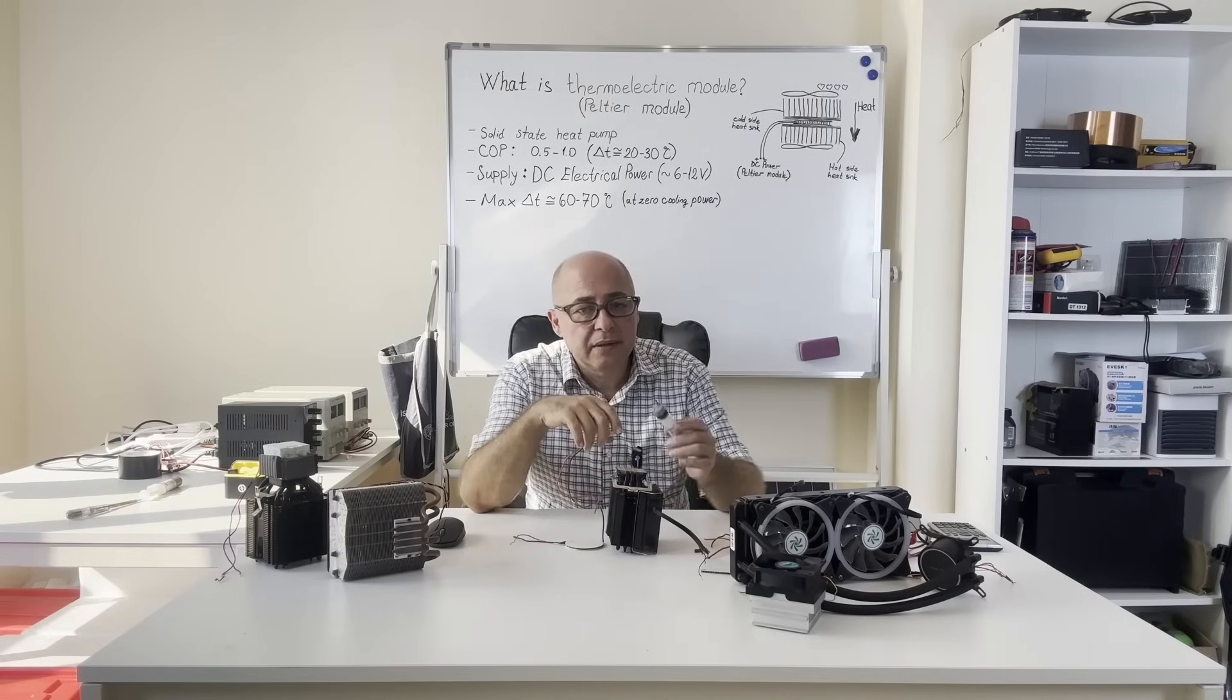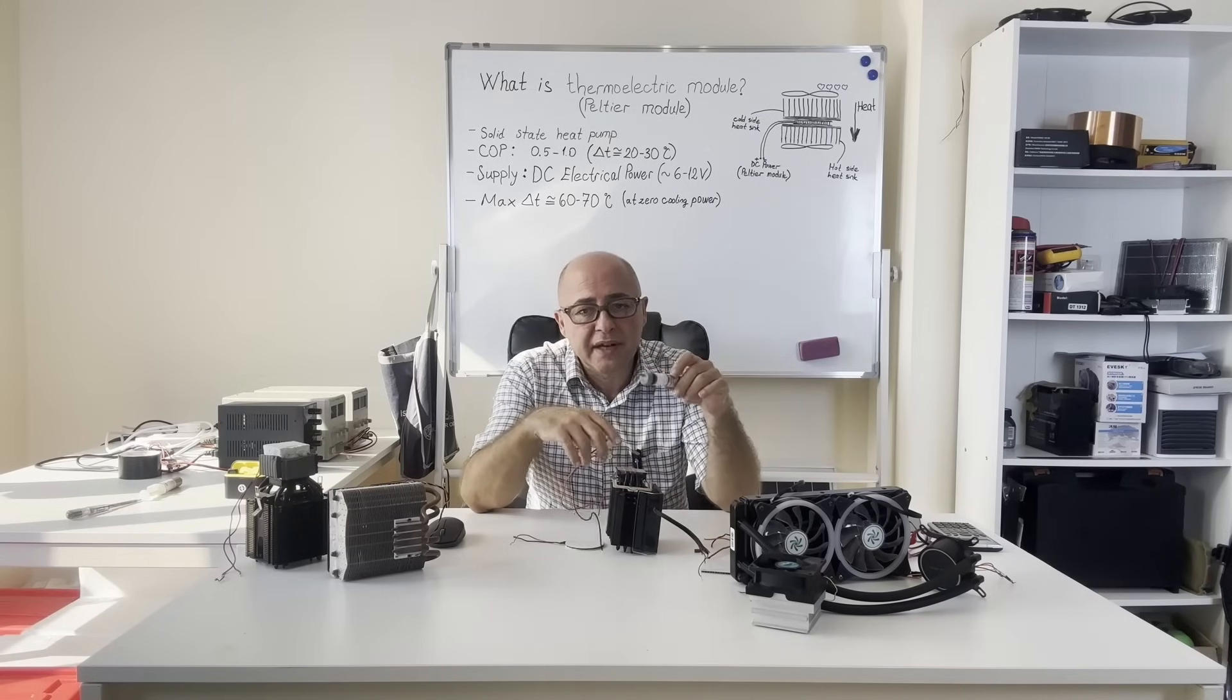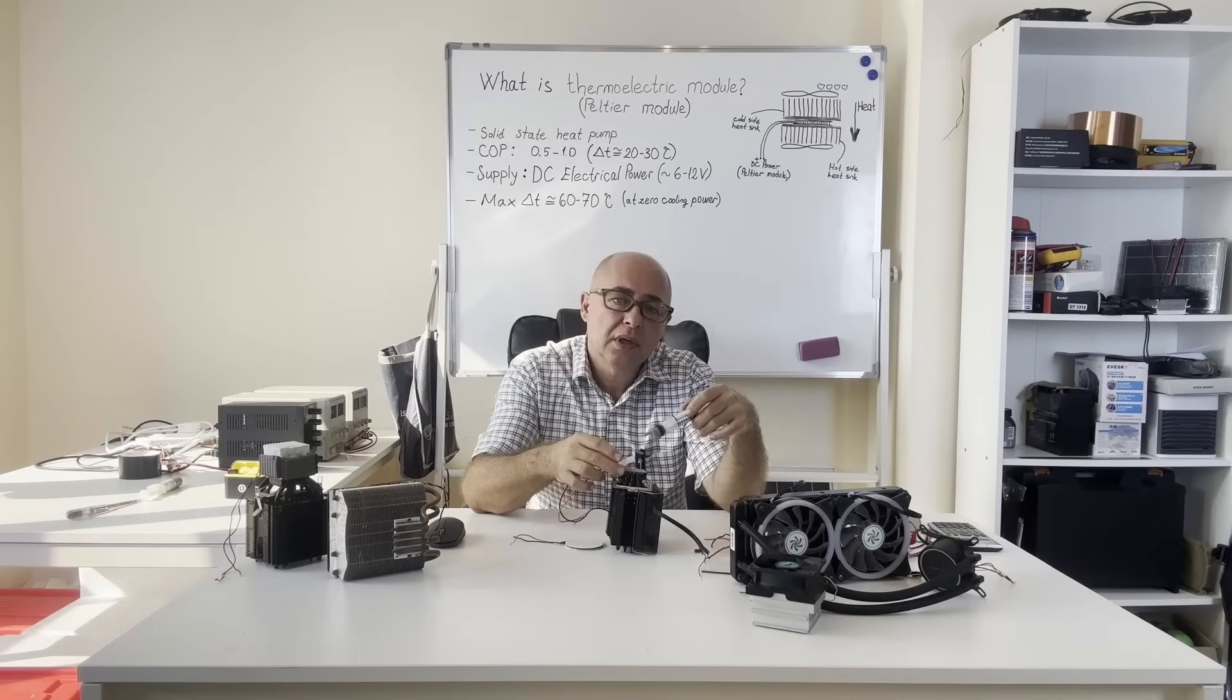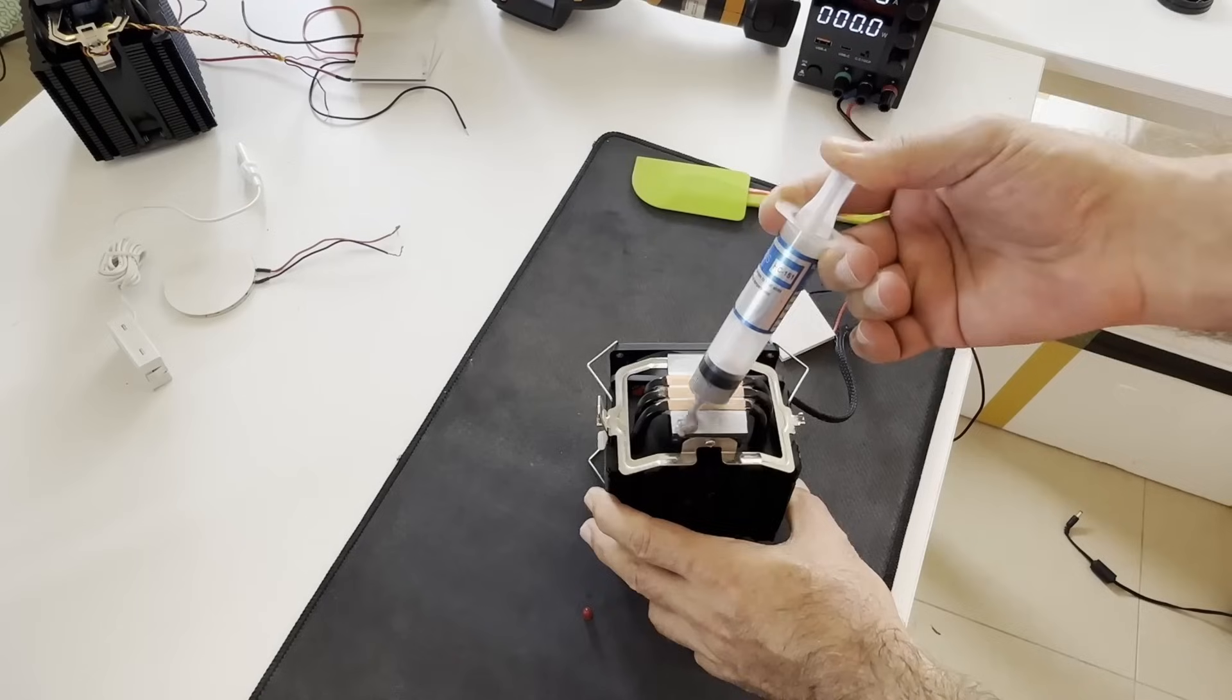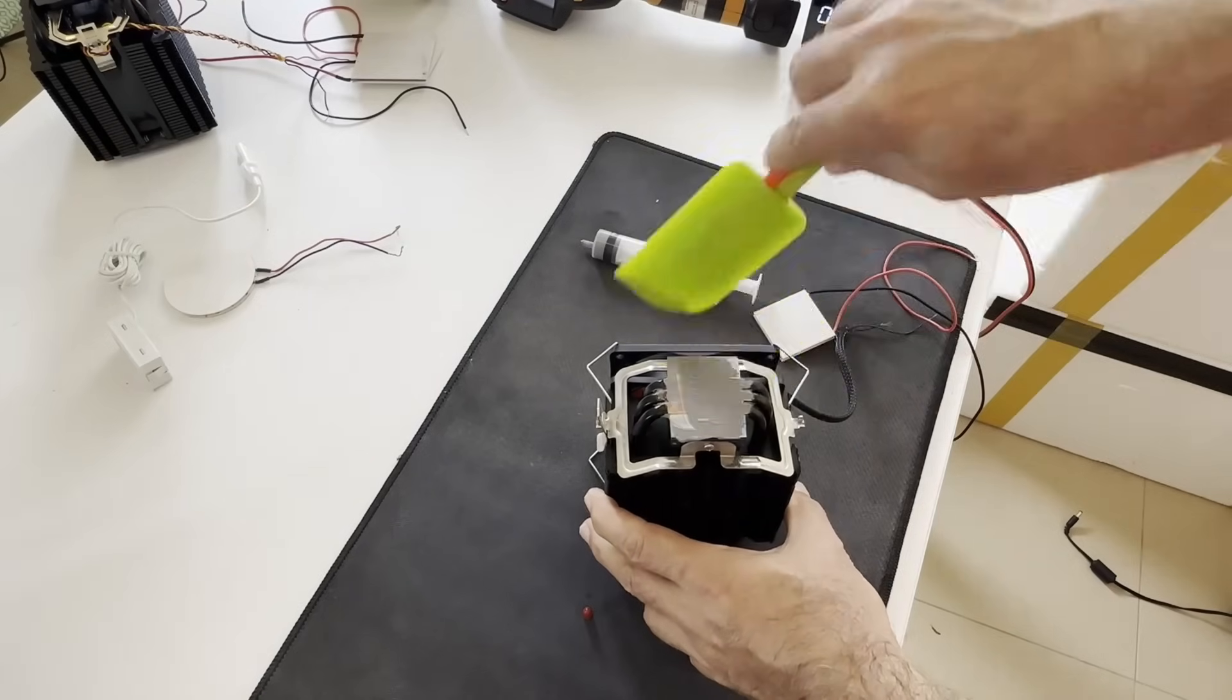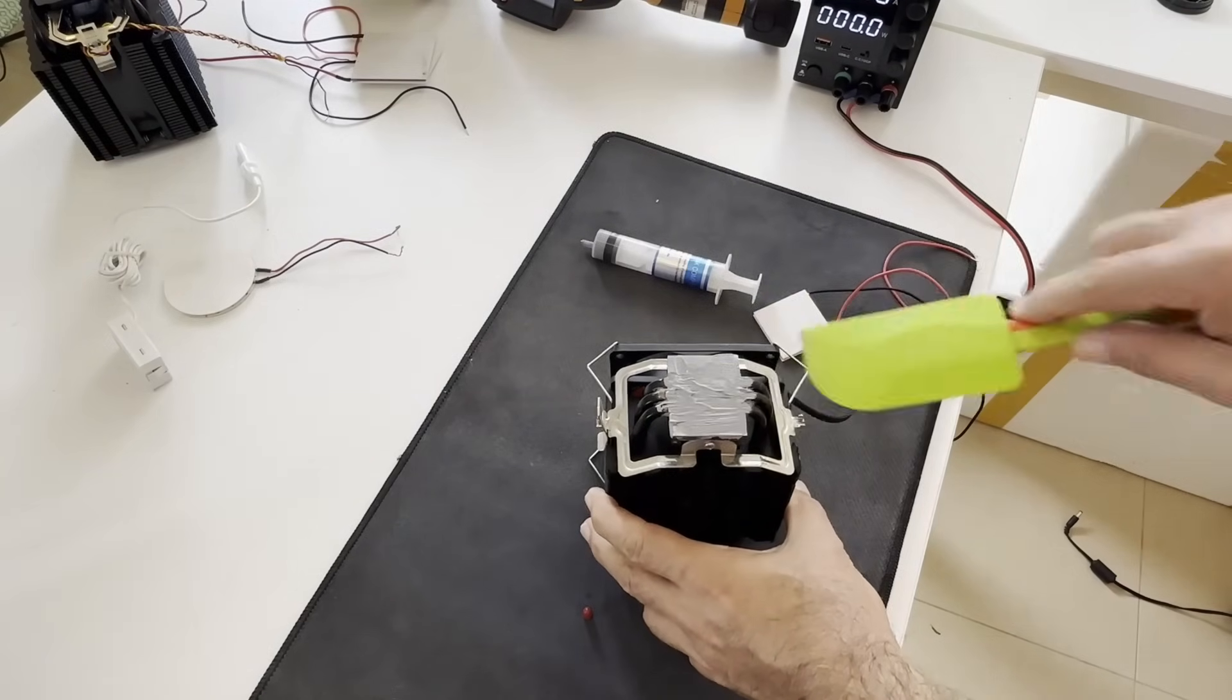Thermal paste must be applied to the Peltier module and heatsink junction surfaces. It would be better to choose a type of thermal paste that has high thermal conductivity, long-lasting and does not leak over time.